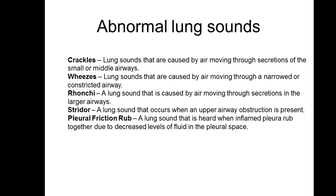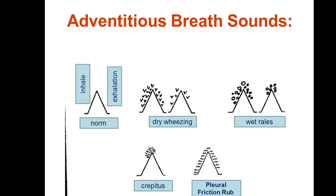There are other abnormal lung sounds: crackles, wheezes, rales, crepitus, and pleural friction rub — these are adventitious breath sounds. Dry wheezing is hearable throughout both the inspiratory and expiratory phases. Wet rales can also accompany both inspiratory and expiratory phases. Crepitations are heard only at the peak of the inspiratory phase, and then there is pleural friction rub.